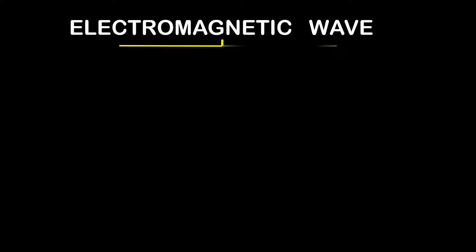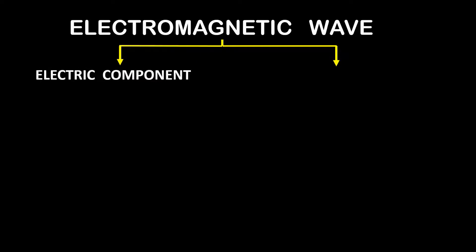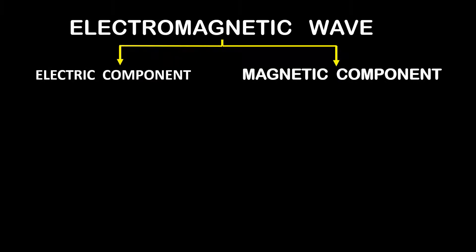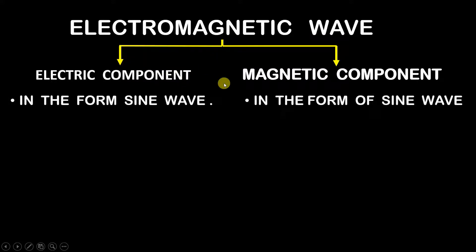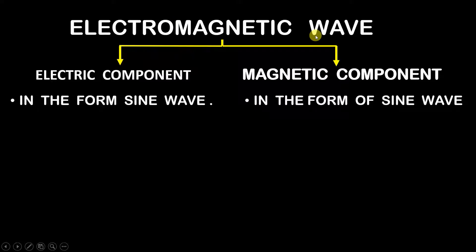What is this electromagnetic wave? It is basically made up of two components: the electric component and the magnetic component. Both contribute in the form of a sine wave — the sine wave of the electric component combines with the sine wave of the magnetic component, and their combination gives us an electromagnetic wave.